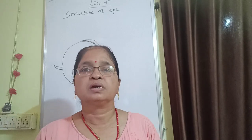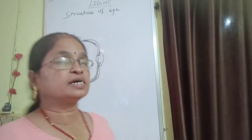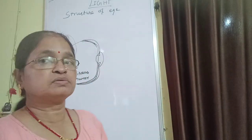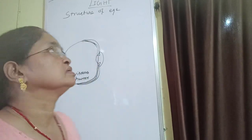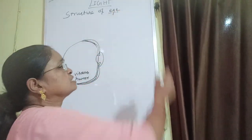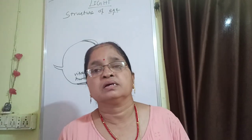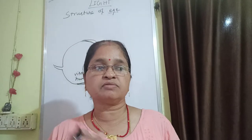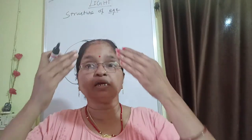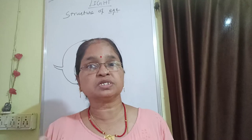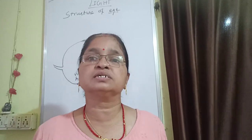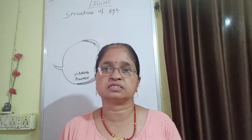Good morning students. Let us proceed with our chapter on light. Today we will discuss the structure of the eye. In the previous class, we just started the eye. The eye is a very sensitive organ which bulges outwards and uses light to make all things visible to us.